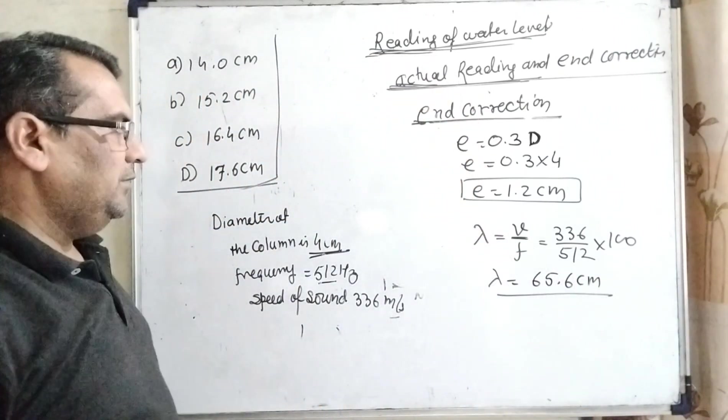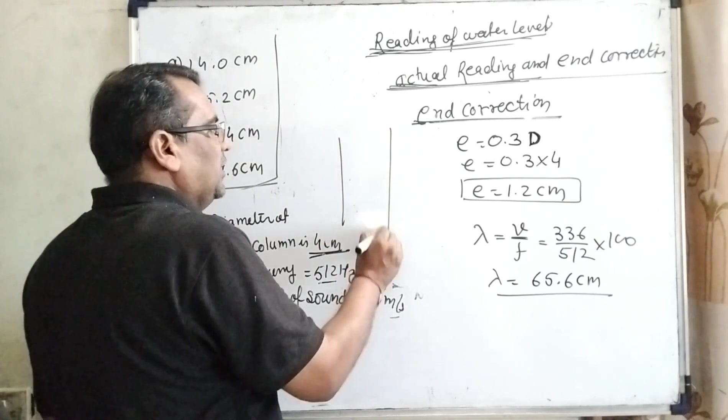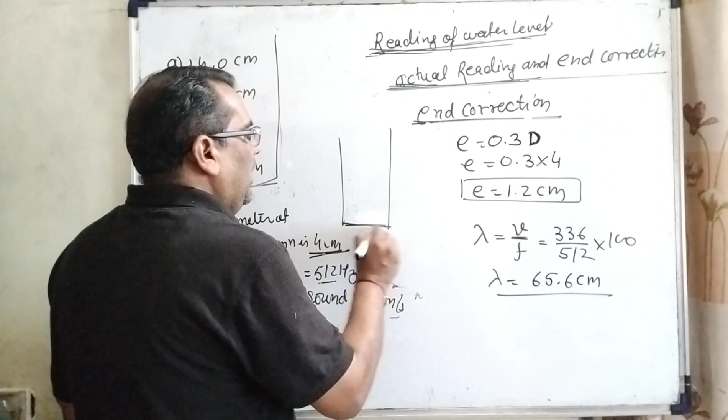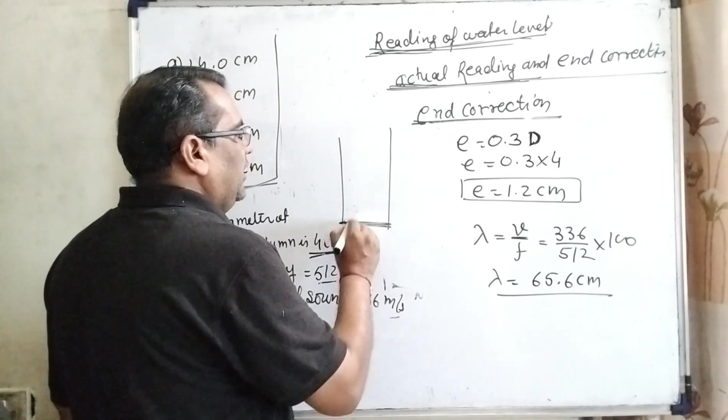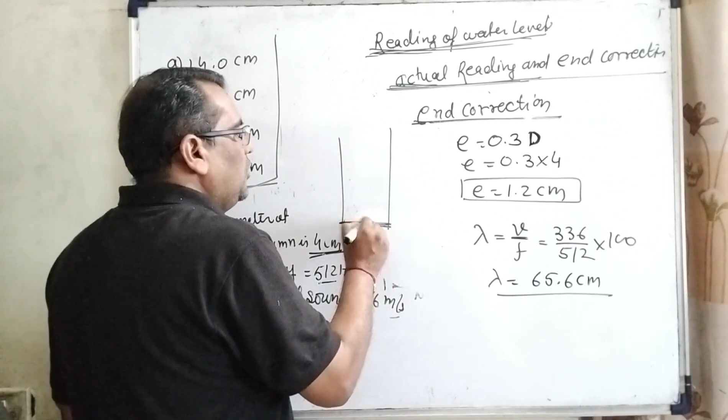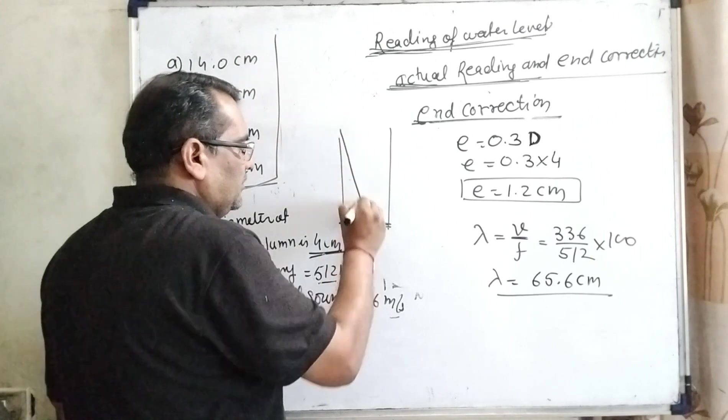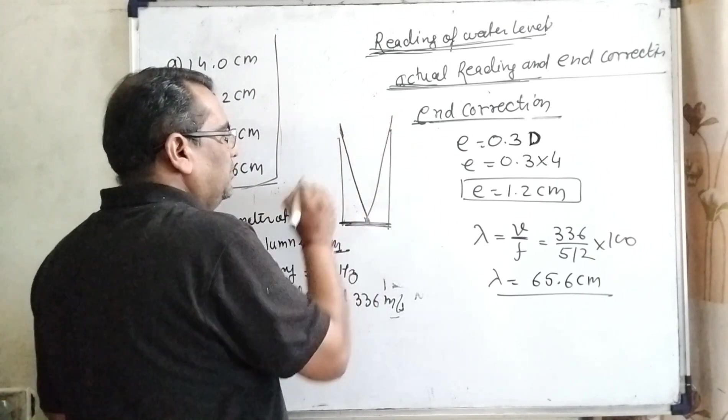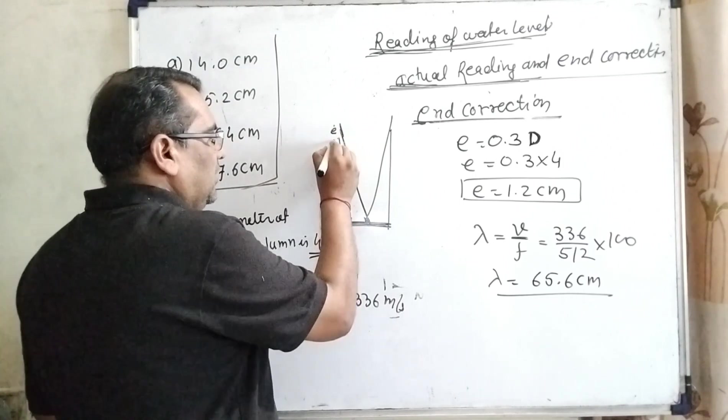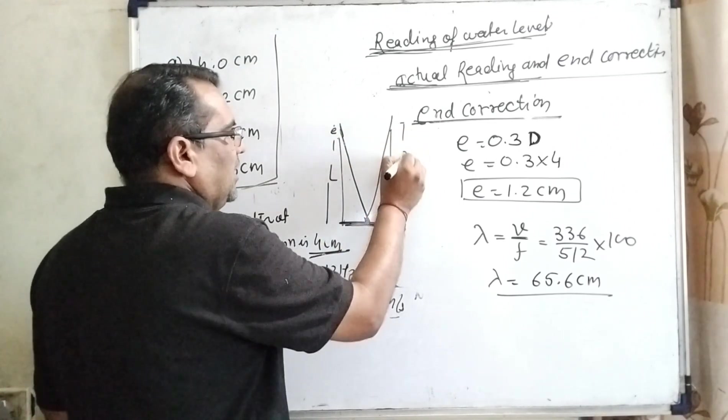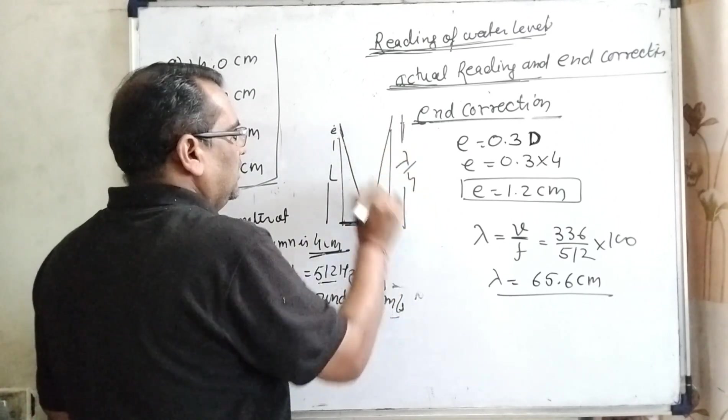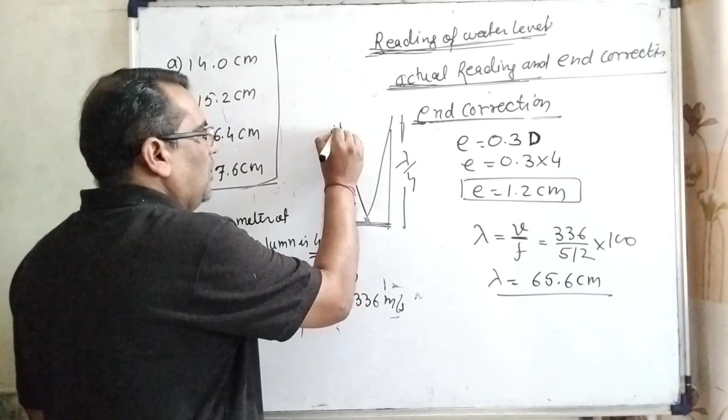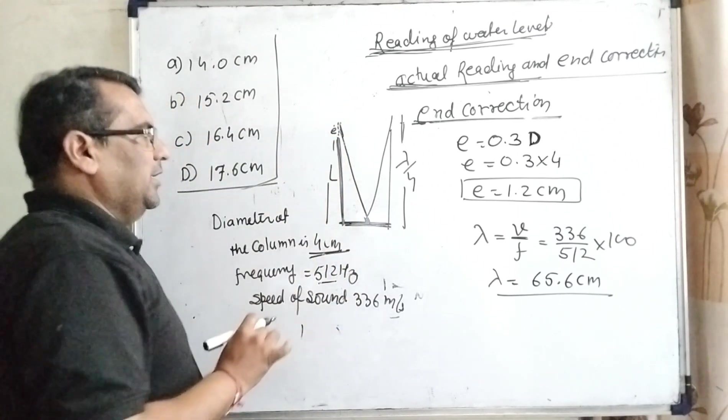As you well know, a water column tube works as a closed organ pipe. Here, at the meeting surface of water and sound, a node is formed. An antinode is formed some distance outside of the tube, and this is E. This is the length of the tube, lambda by 4 total. It is slightly outside, called end correction.